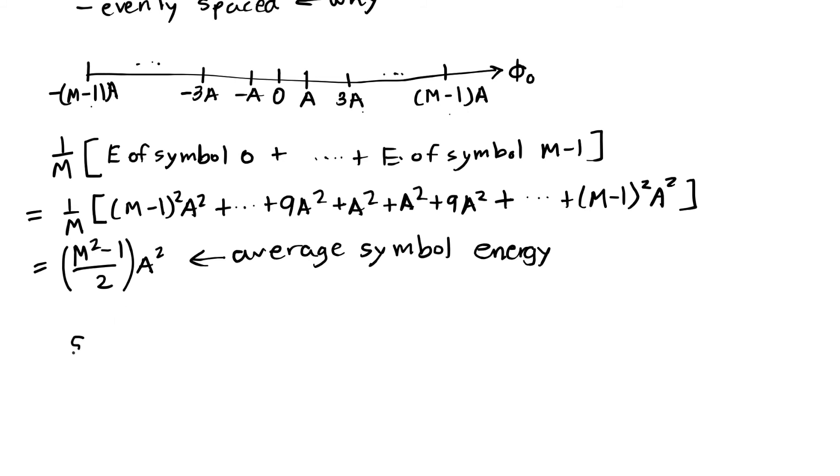So our total transmitted signal would look something like this. We're going to have a sum over integer n. Basically, at that time n, we're going to pick one amplitude. And that amplitude is going to multiply our pulse shape. But instead of just being P of T, it's going to be delayed by n times T sub s, where T sub s is our symbol period, and n is the symbol number in time that we're sending.